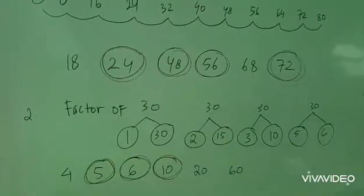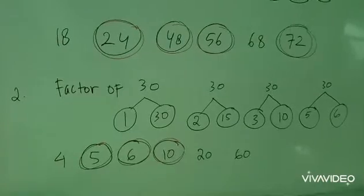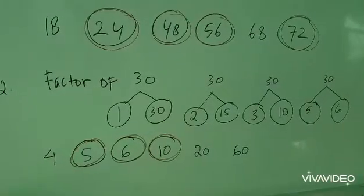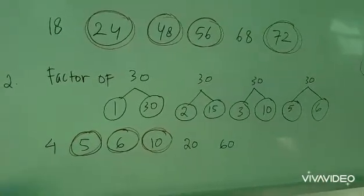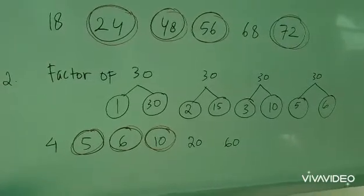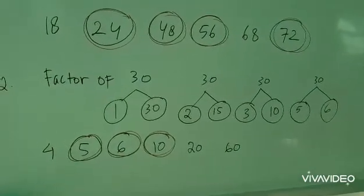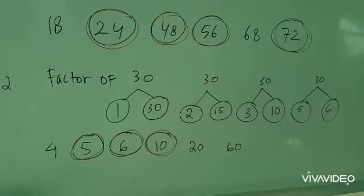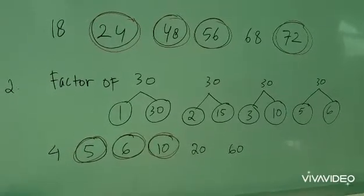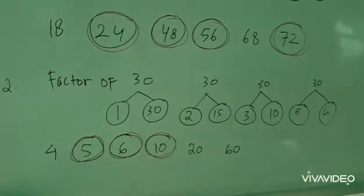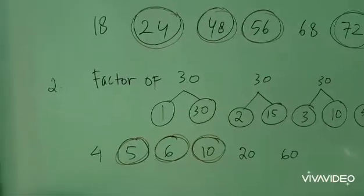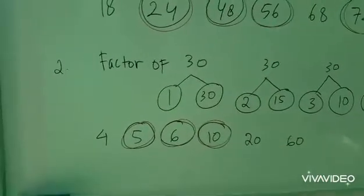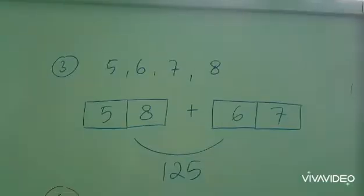And number 2, you find the factors of 30. And the answer is 5, 6, 10. Jadi number 2 ini dicari dulu faktor 30, yaitu angka-angka yang bisa dikalikan yang menghasilkan angka 30. Contoh 1 times 30, 2 times 15, 3 times 10, 5 times 6. So the answer for number 2 is 5, 6, and 10. You can circle the numbers.